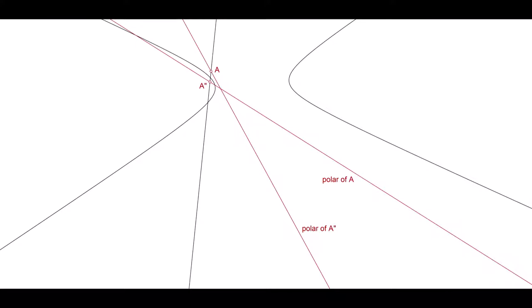Given a line and a conic, co-planar, project any point of the line to the intersection of its polar with the given line. Because of the fundamental theorem of pole and polar, this projectivity is an involution.